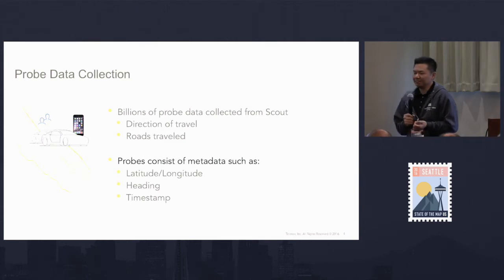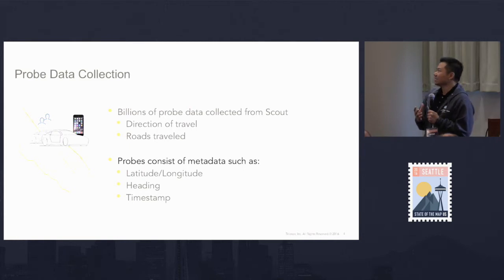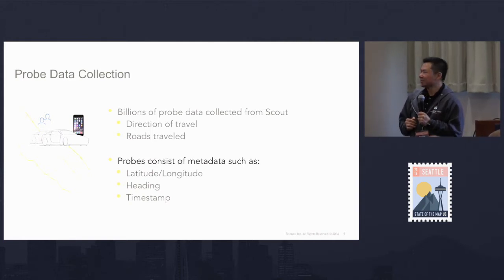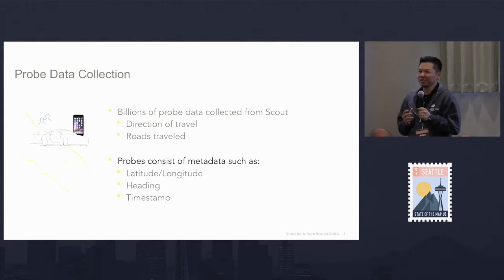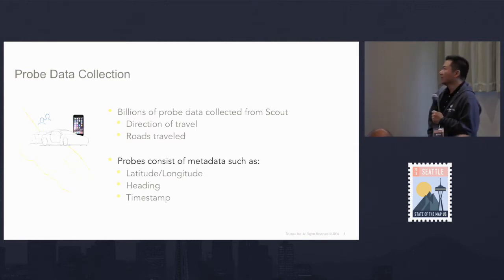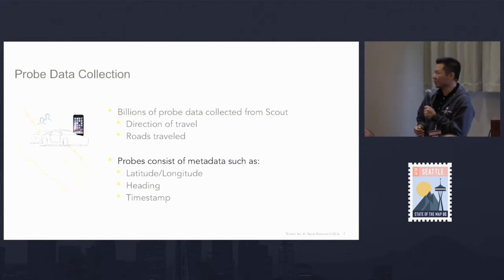What we found is we have a wealth of probe data through our Scout app and also through other sources, where we're able to take the probe data and find out the direction of the road that was traveled. Probe data is more like DNA - it tells a story of where the location was from the start to end of that trip. It also includes data such as the lat/long, the heading, and the timestamp every time it records a probe.